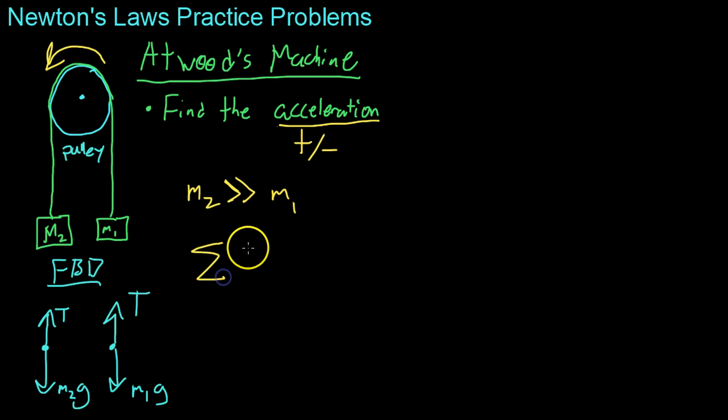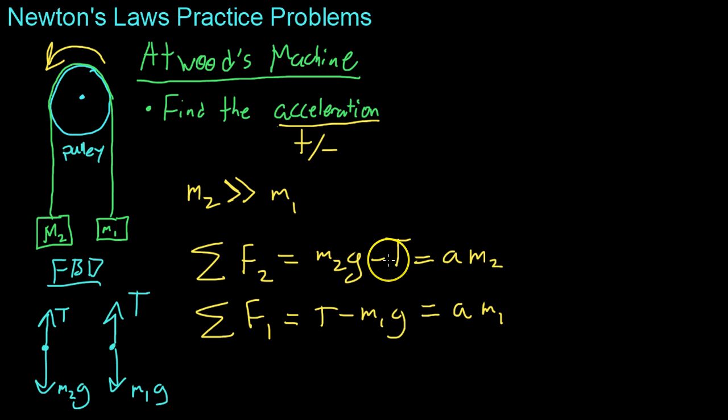Basically, we're going to have two equations with two unknowns. In this case, we sum the forces on two, which is M2g minus the tension in the string. And then when you sum the forces on object number one, you get T minus M1g. And both of these are going to equal the acceleration they're experiencing times their respective mass. In this case, M2 and then M1.